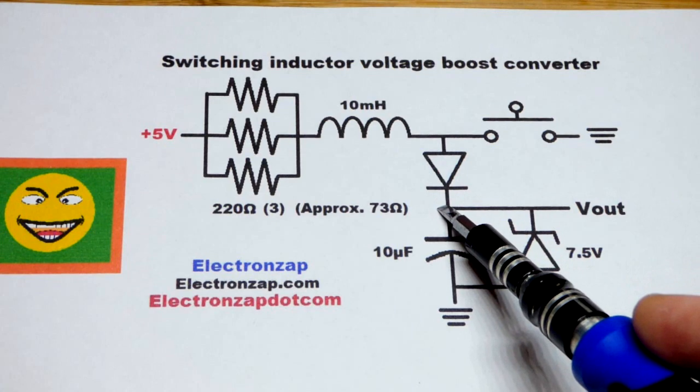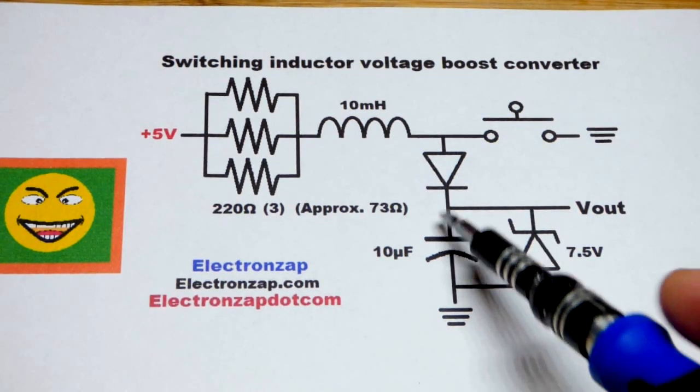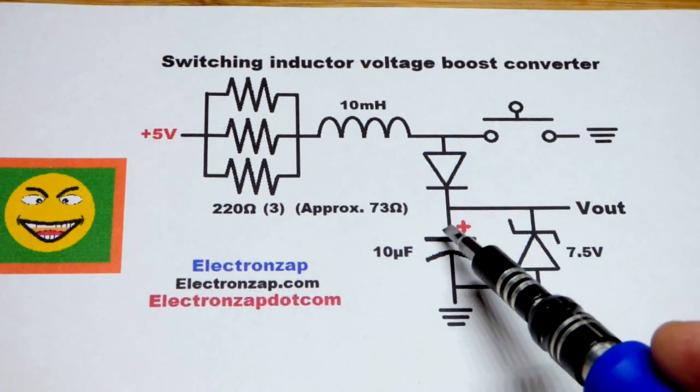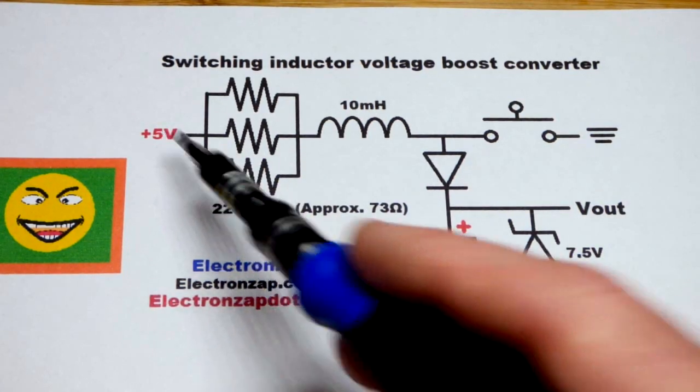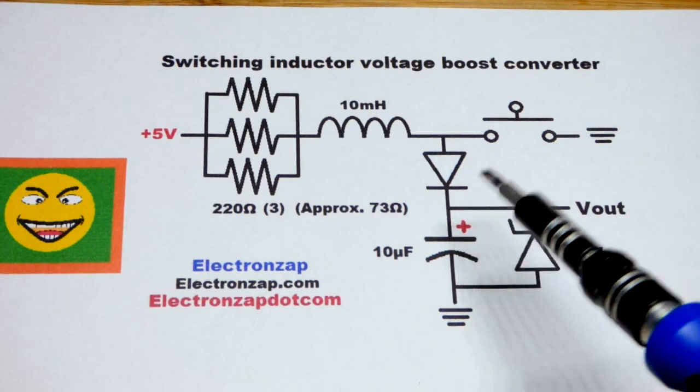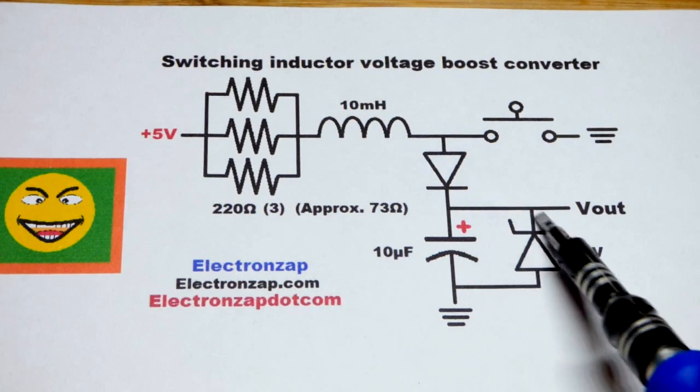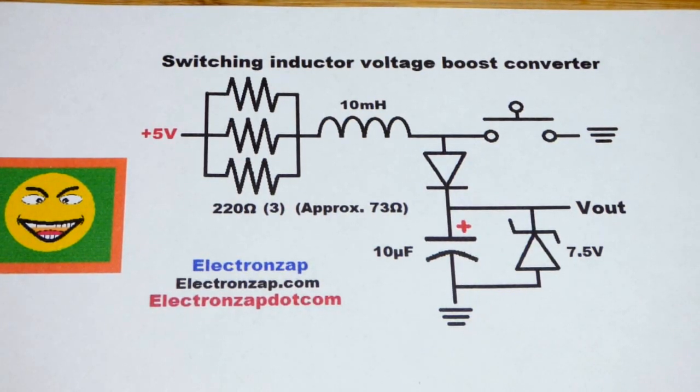But we do have another current path. Now the current can go through the rectifier diode and into the capacitor. The more current you pump into a capacitor, the higher its voltage. It doesn't matter if it's higher than the supply voltage - as long as you force current into it, which the inductor will do, the voltage goes up.